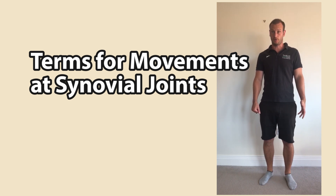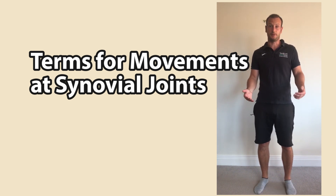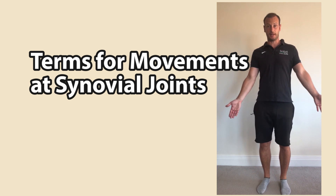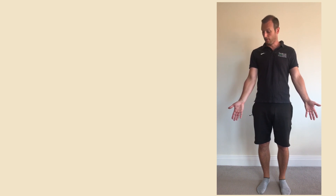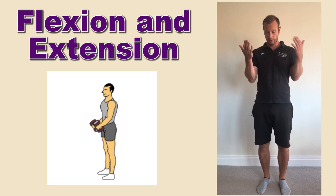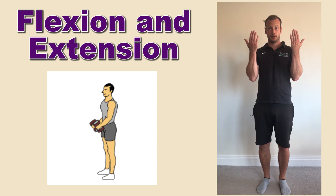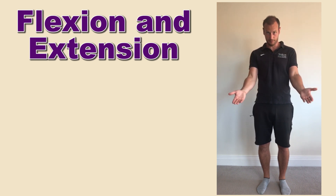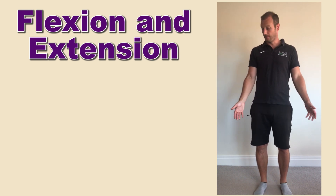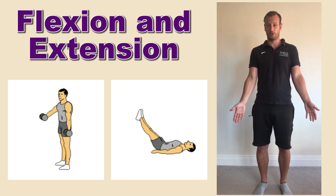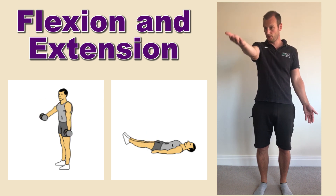Movement at joints — we need to be able to describe a sporting movement and the movement that takes place at each of the synovial joints. To do this we need to be aware of the anatomical position: standing upright facing forwards with palms facing the front. Flexion at the elbow is to bend the arms, coming forward from that anatomical position, closing the angle of the joint. Extension at the elbow is to straighten the arms. Flexion also occurs at the shoulder and hip — anything moving forward from the anatomical position is flexion, and moving back is extension.